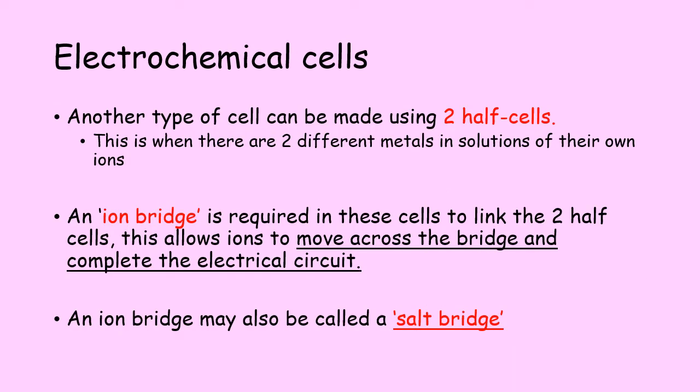There is a second type of electrochemical cell made of two half cells. This is where we have two different metals each in a solution of their own ions, connected by an ion bridge, sometimes called a salt bridge. That bridge is required to link the two half cells together to allow ions to move across and complete the electrical circuit.